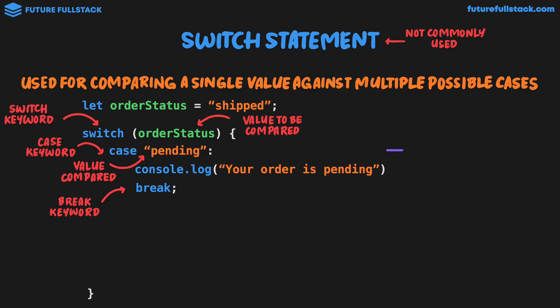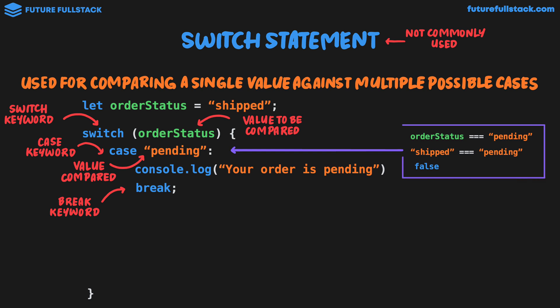The break keyword effectively breaks the switch statement so it ends there and won't continue assessing other cases. Let's break down the logic inside the case to see what's happening. We're comparing order status to the case pending — so it looks like this: orderStatus strictly equals pending. That's why the switch statement is specifically used for equality comparison, because behind the scenes that's what's happening. The current value assigned to order status is shipped, so this is shipped strictly equals pending, which is false. So this case won't run.